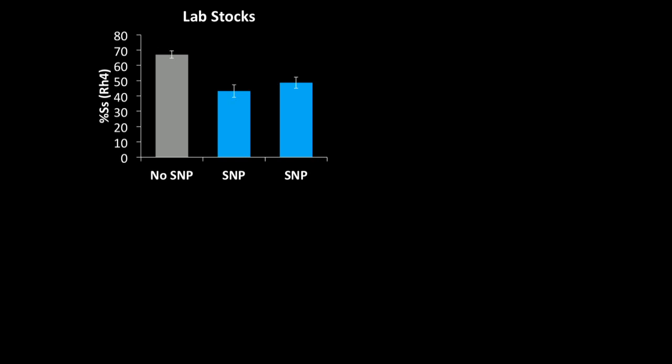So to confirm the causality of the SNP, we started to look for it in other populations. And we happened to find it in two of our independent lab stocks. And in both cases, we see a similar decrease in spineless expression frequency.